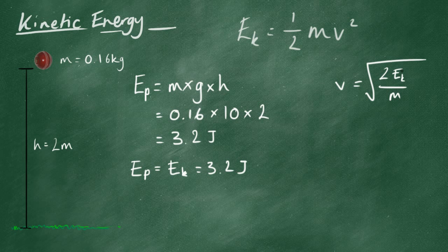Now, we know everything in this equation here. So, v equals the root of 2 times 3.2 divided by the mass, hasn't changed, 0.16 kilograms.